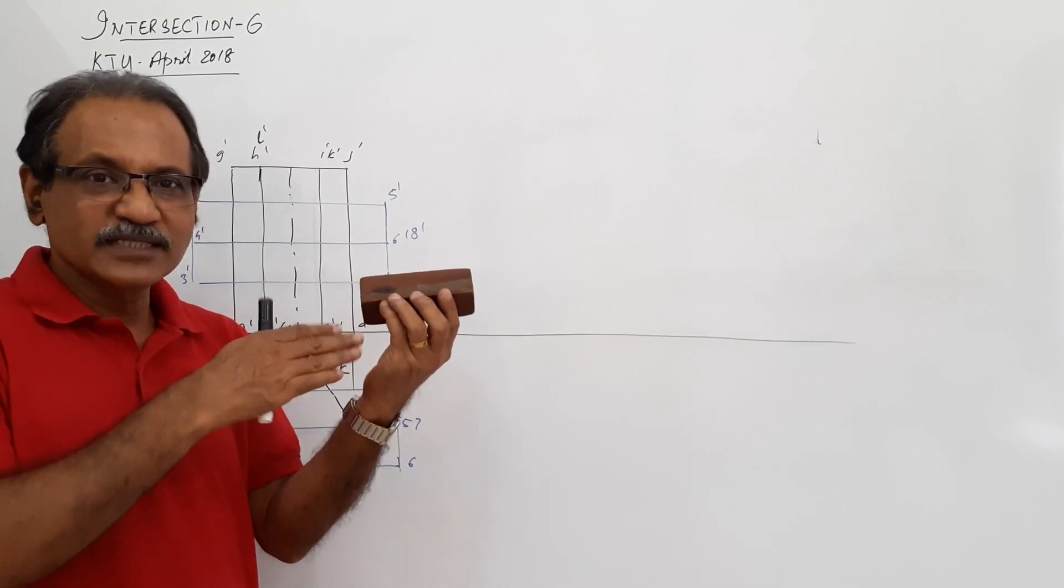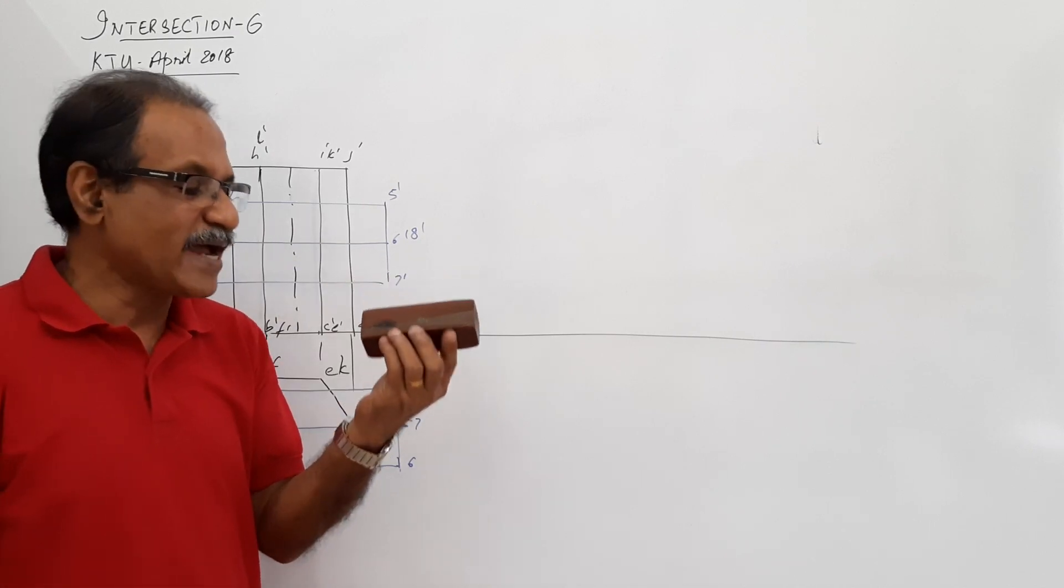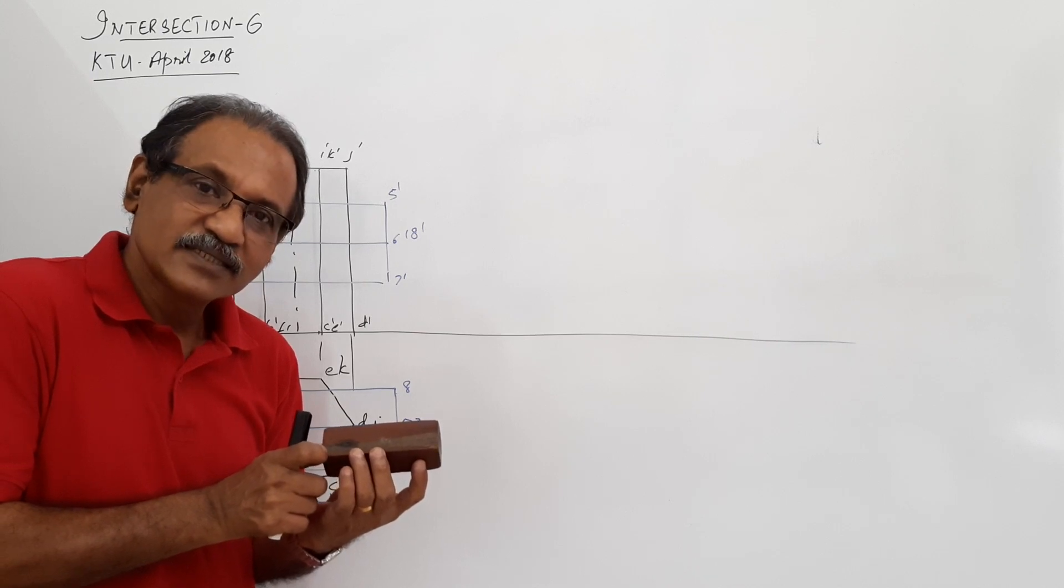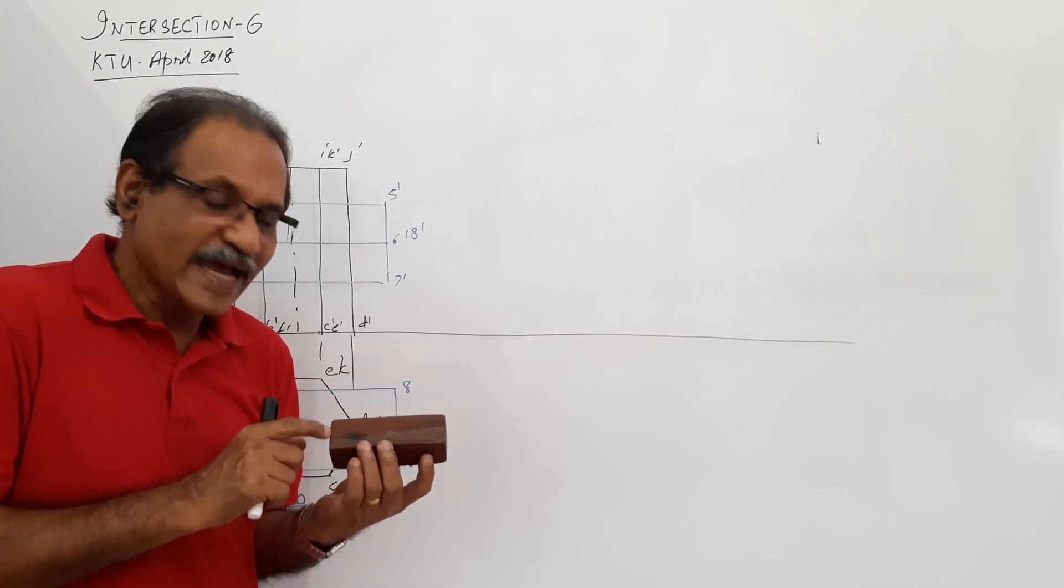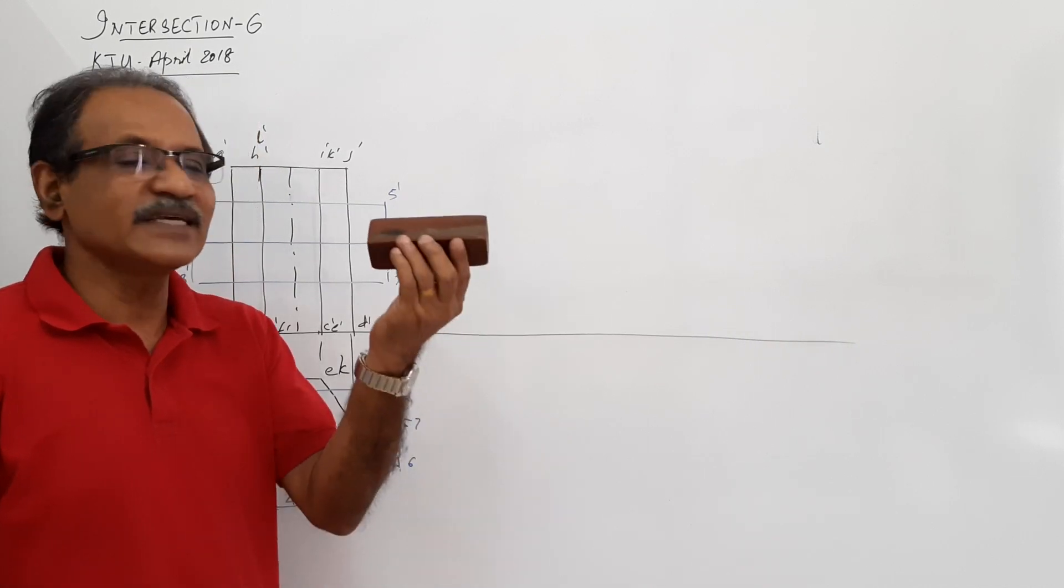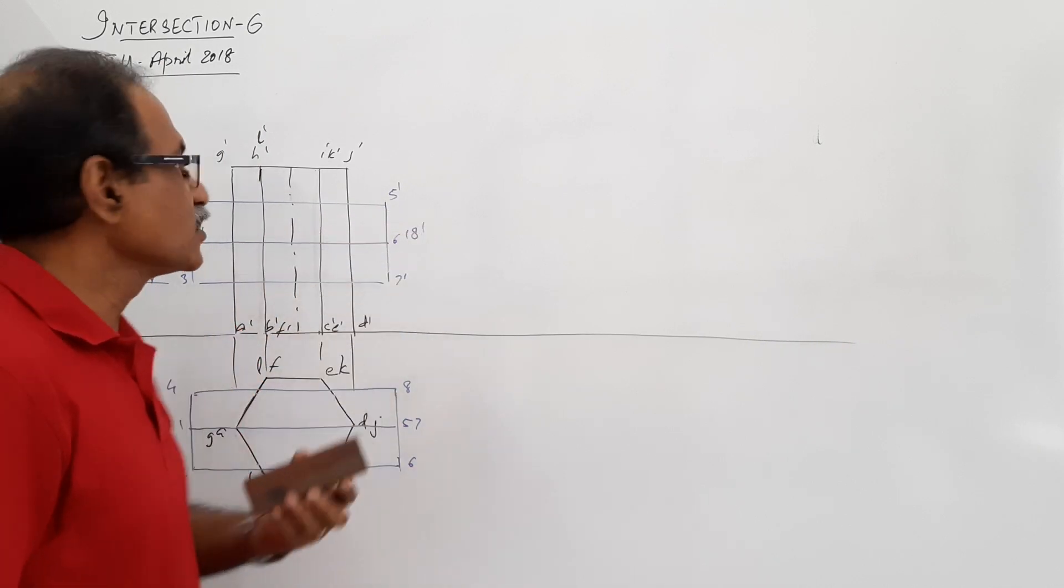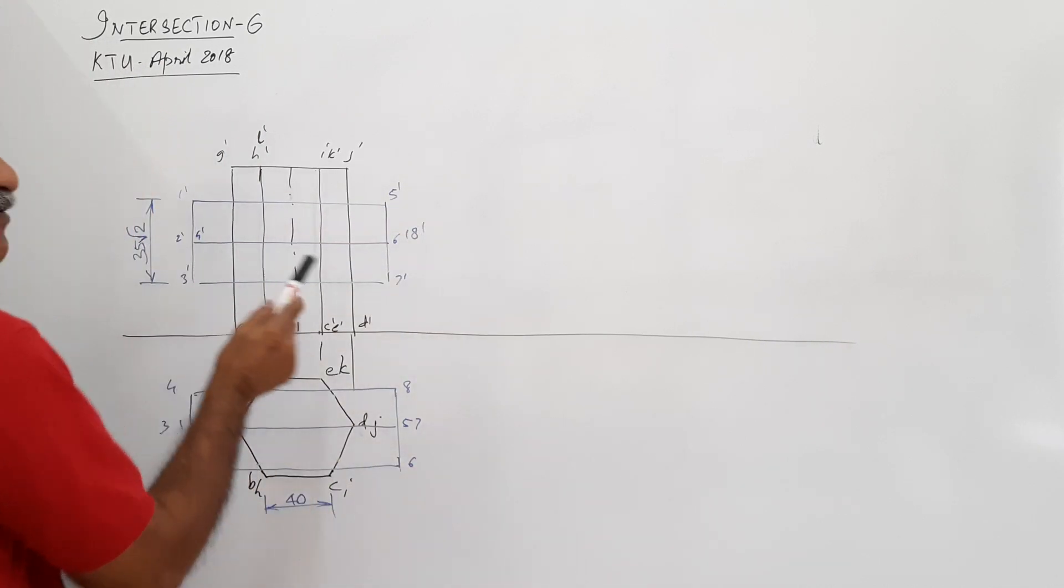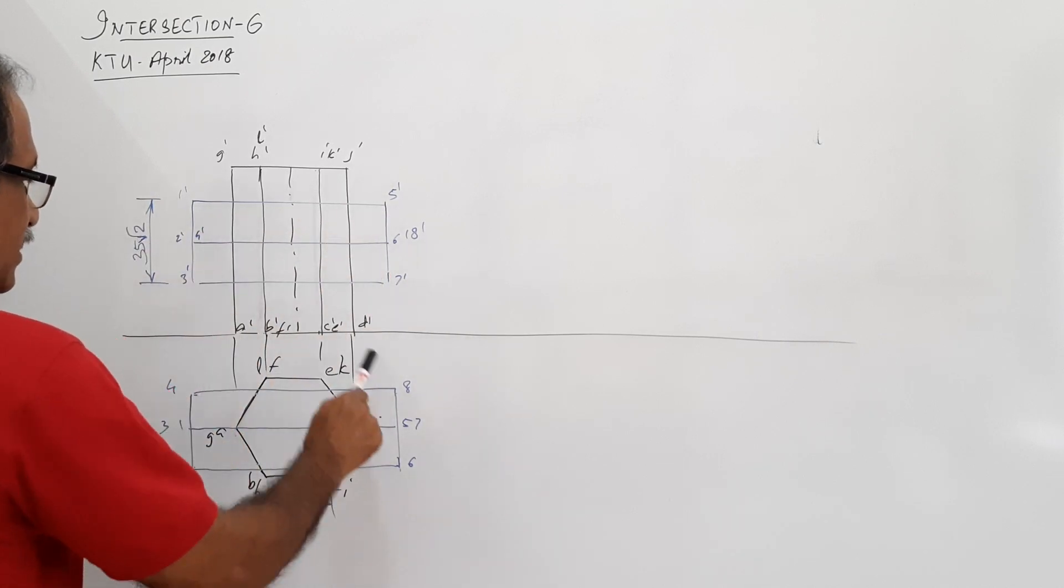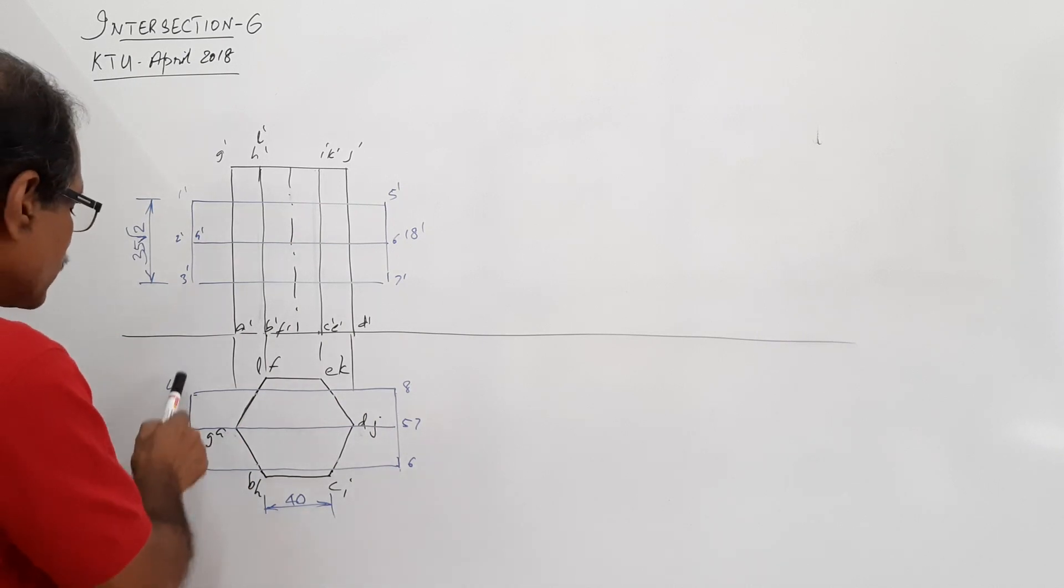What's the plan? Plan is a rectangle whose side is side of the square into root 2, and length is the axis length. Similarly, the elevation is a rectangle whose width is side root 2 and length is axis length. First, I draw the elevation. 35 is the side, so this is 35 into root 2.